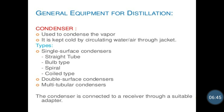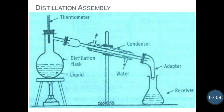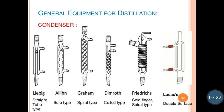There are different types of condensers: single surface condenser, double surface condenser, and multi-tubular condensers. Single surface condensers have different types like straight tube, bulb type, spiral, and coil type. This condenser is connected to a receiver through a suitable adapter. This is the basic distillation assembly.